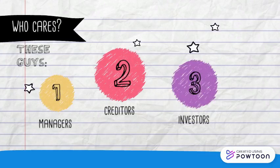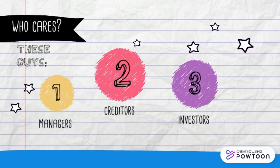Managers, creditors and investors are the primary people who are interested in how a company manages its accounts receivables. This is because accounts receivables is an uncollected sale, so analysing receivables allows certain parties to view how well a company is collecting their accounts receivables.